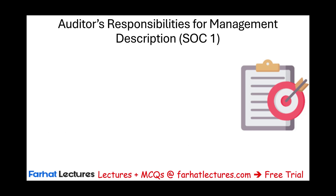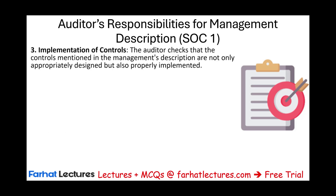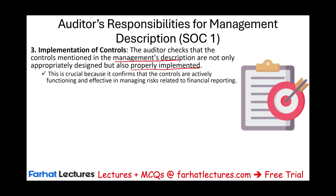Another responsibility is the implementation of controls. The auditor checks that the controls mentioned in the management description are not only appropriately designed but also properly implemented. This is crucial because it confirms that the controls are actively functioning and effective in managing risk related to financial reporting — they could be on paper, but we want to make sure they are implemented.